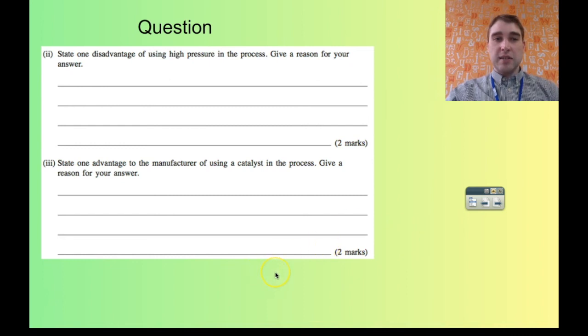Down here it says, state one advantage of the manufacturer of using a catalyst in that process. By using a catalyst, you provide an alternate energy pathway with reduced energy requirements. And what that means is, more particles will already have the required activation energy as long as they're interacting with the catalyst. You might not need to heat up the gas as much in order to get the reaction to occur. You might not need to have as much pressure. And again, that will save money in terms of costs. By using a catalyst, you can reduce the required activation energy and therefore reduce costs in terms of heating or pressure.